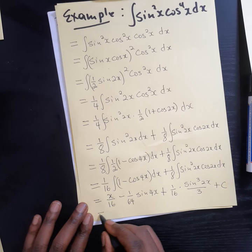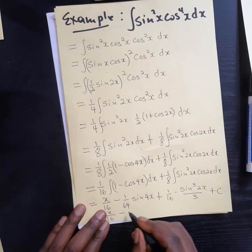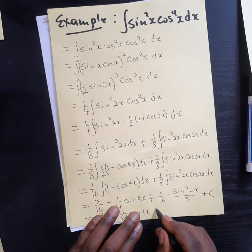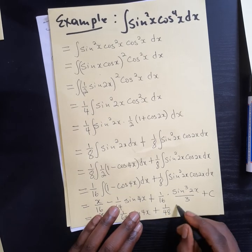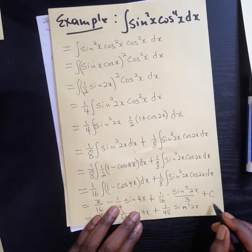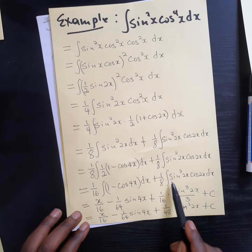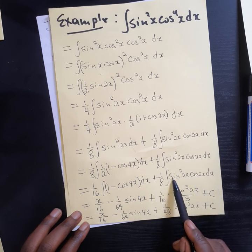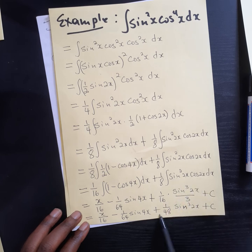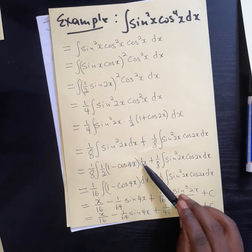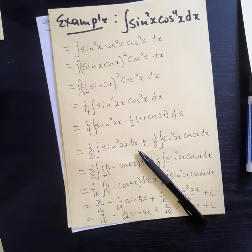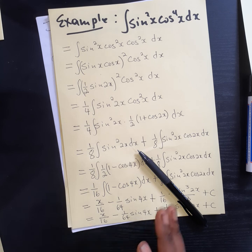Which of course is giving us x over 16 minus 1 over 64 sine of 4x plus 1 over 48 sine cube of 2x plus c. You may verify this by just using the ordinary u substitution for this one. You let your u to be the sine of 2x, you differentiate that, then you will find that you are going to end up there. So this example is important to us. It was supposed to be done before we deal with the powers of tangent and secant. I just skipped it by mistake.